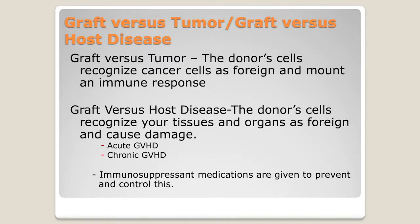Healthy immune systems every day fight off offenses and fight off mutations. People who are coming to stem cell transplant no longer have the ability to do that. So we evict their renter, we move in the new one. The new renters in there killing the cockroaches and dust mites — that is graft versus tumor or graft versus leukemia. That is the desired effect from transplant.